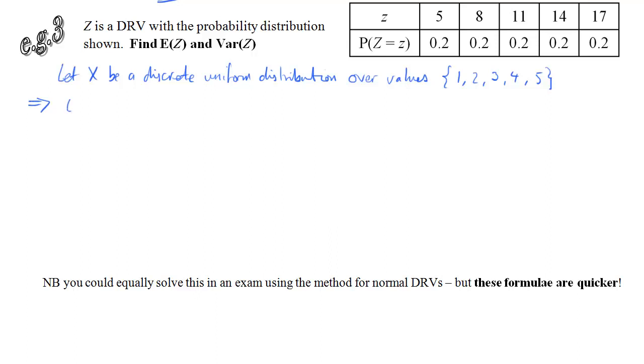For this variable, x, we can work out the expected value. So n is 5, so 5 plus 1 over 2 is 3. And we can work out the variance. n squared minus 1 over 12 is 25 minus 1 over 12, which is 2.